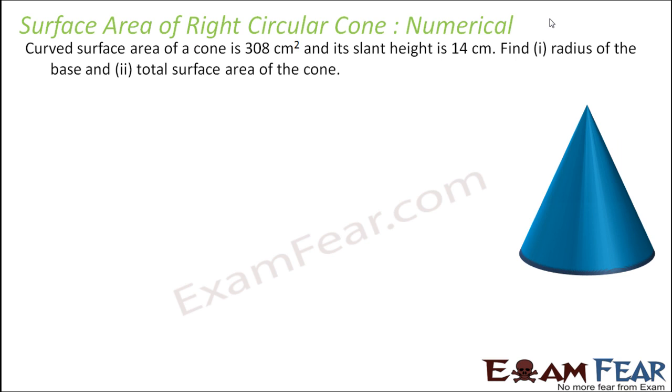The curved surface area of the cone is given 308 cm square. Slant height is 14 cm. You define the radius of the base and the total surface area of the cone. So it is pretty easy, straightforward question, right?